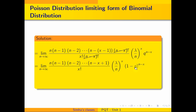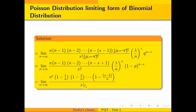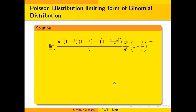Now, q equals 1 minus p, which gives us 1 minus p to the power n minus x. Taking each n from the product in the numerator, we get n to the power x. The remaining terms become: 1 times (1 minus 1/n) times (1 minus 2/n) and so on up to (1 minus (x-1)/n), all divided by x factorial. Then we have lambda to the power x divided by n to the power x, times (1 minus lambda over n) to the power n minus x. Now n to the power x cancels with n to the power x.